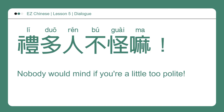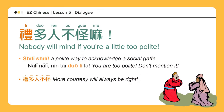礼多人不怪嘛。Nobody would mind if you're a little too polite. In professional settings, 实力实力 is a polite way to acknowledge a social gaffe. 哪里哪里，您太多礼了 is the response meaning 'You are too polite' or 'Don't mention it.' 礼多人不怪 is a frequently used phrase meaning more courtesy will always be right.